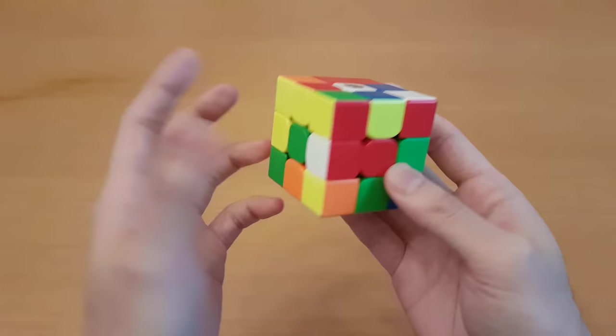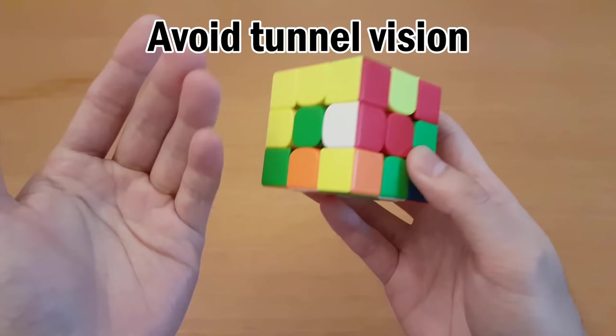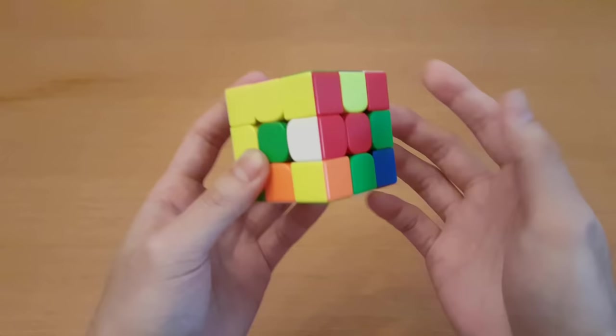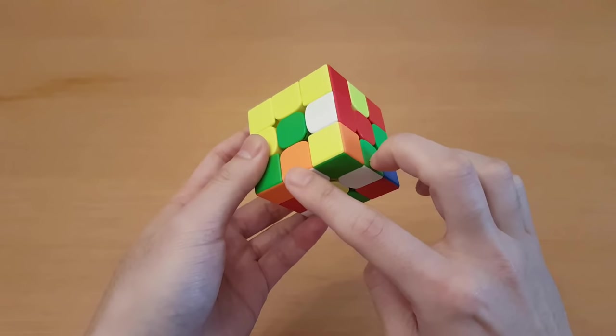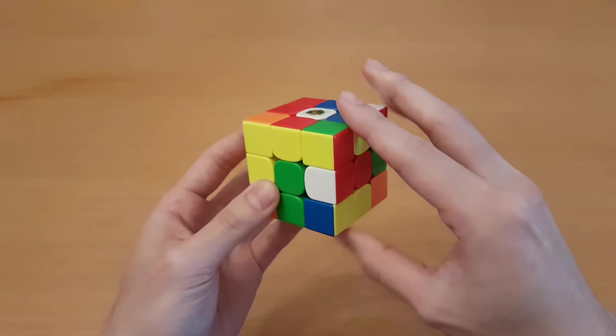Finding all the pieces before you get started can also help you avoid tunnel vision on the easiest case, and instead try and set up an easier entire cross. In this example, a lot of beginners will start by solving red. But you can notice first that orange and green being right next to each other is really convenient for later. So if we do that first and then solve red, the cross gets much easier.